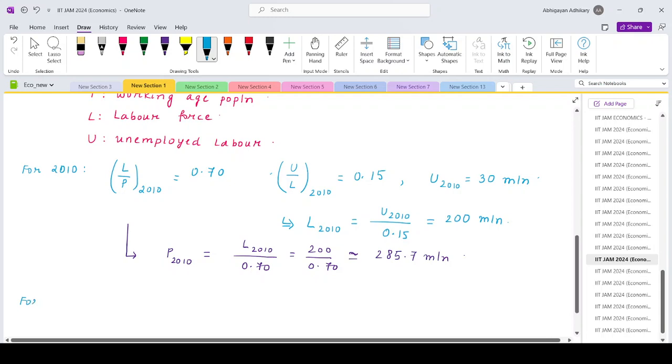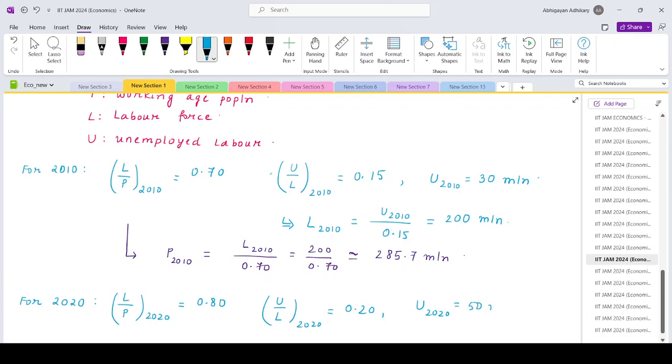Similarly we'll do for 2020 as well. So the first information: labor participation rate for 2020 is 80%, that is 0.8. The unemployment rate for 2020 is 20%, so that is 0.2. And the total unemployed people in 2020 is 50 million.